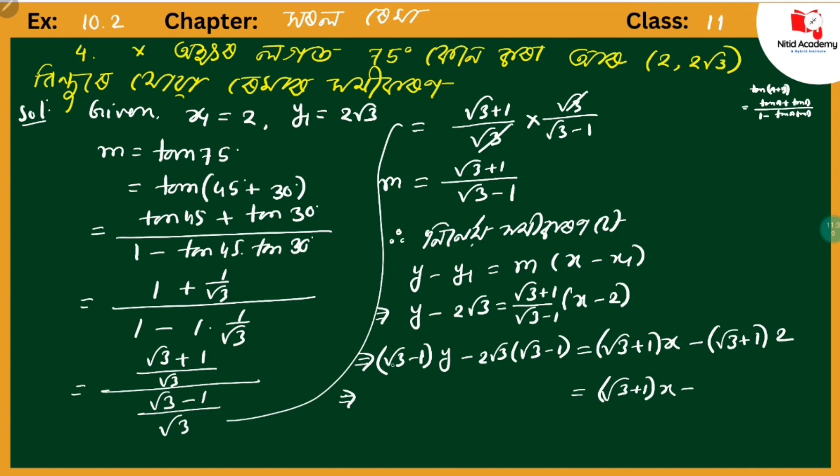For the left side: (√3 - 1)y minus 2√3·√3 = (√3 - 1)y - 2·3 = (√3 - 1)y - 6. Adding the 2√3 term gives (√3 - 1)y - 6 + 2√3.